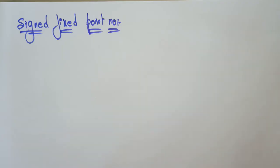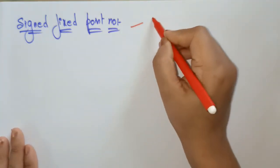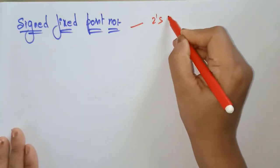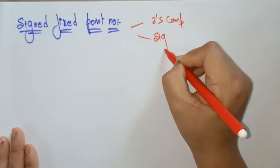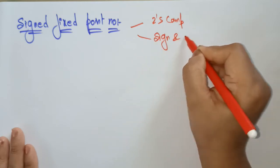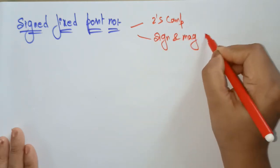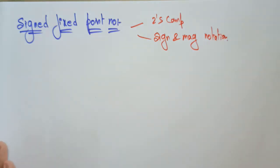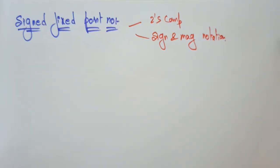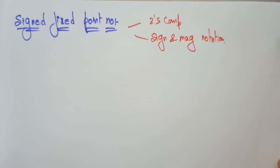Signed means a negative fractional number. This negative fractional number can be represented in two ways: one is the two's complement, and another is the sign and magnitude notation. So you can represent negative values with two's complement or by using the sign and magnitude notation.